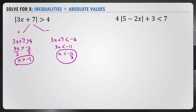So these are your two answers. In interval notation, x is all numbers greater than negative 1, so from negative 1 all the way to infinity, not including negative 1 — we use a round bracket. And x is also all numbers less than negative 11 over 3, which is negative infinity all the way to negative 11 over 3, not including those two endpoints.